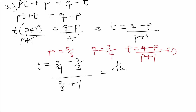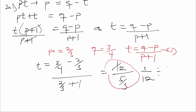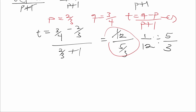2/3 plus 1 gives us 5/3. So the whole expression becomes 1/12 divided by 5/3. We change the division sign to multiplication and reverse the fraction, giving us 1/12 times 3/5. Since 3 goes into 3 once and into 12 four times, we get t equals 1/20.